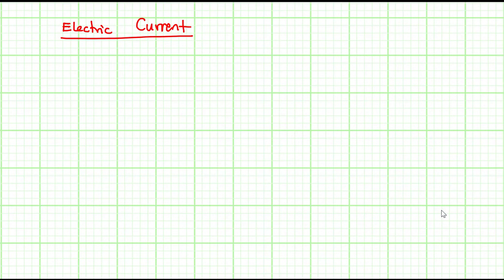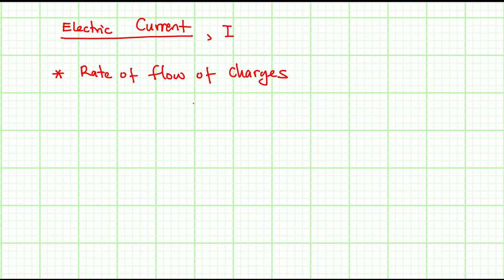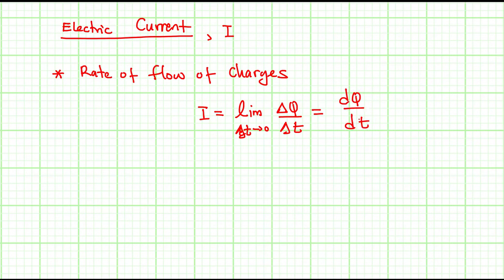Today we will look at DC current circuits. Electric current, often denoted by I, basically represents the rate of flow of charges. In other words, I is defined as the limit of ΔQ divided by ΔT as T tends to 0, which is equal to dQ/dT.